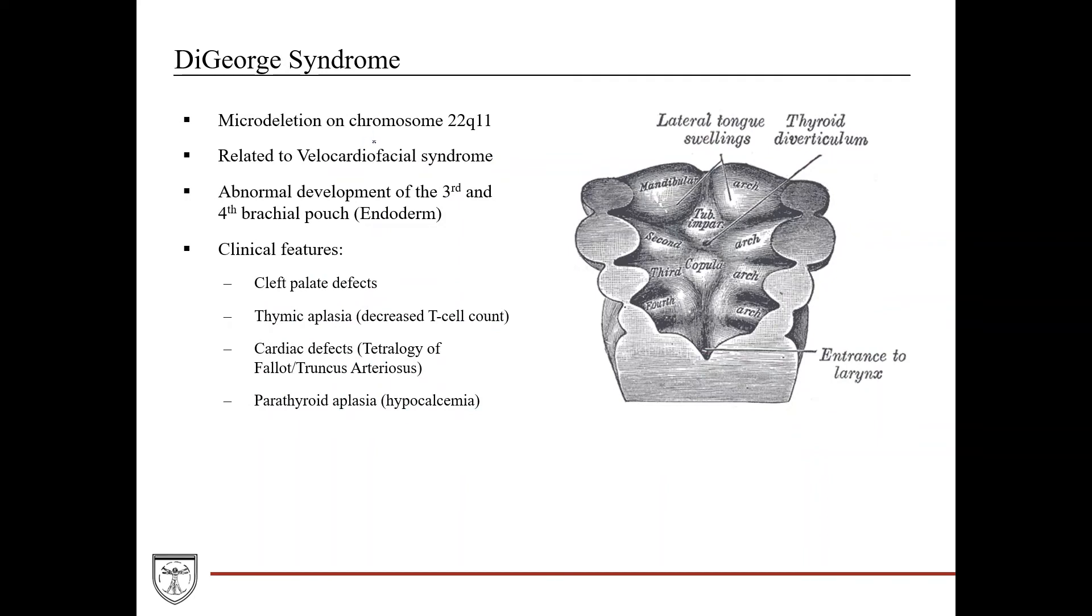DiGeorge syndrome, this is a microdeletion on chromosome 22Q11, similar to velocardiofacial syndrome. Key thing here is it's abnormal development of the third and fourth brachial pouches.